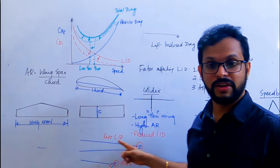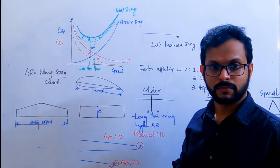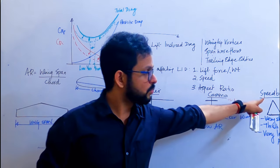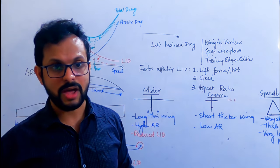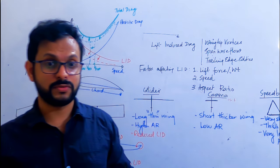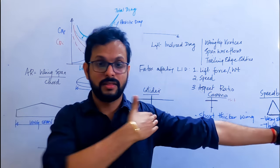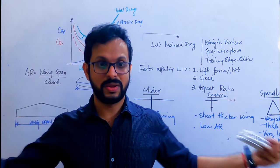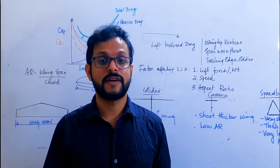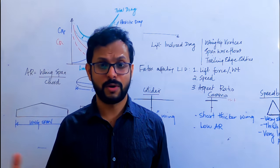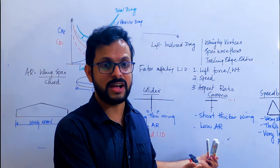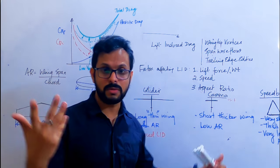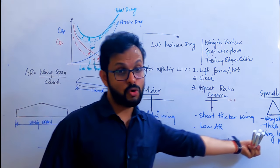Now do you understand why we need to make gliders with a high aspect ratio? It reduces lift-induced drag. But what is the problem with having a high aspect ratio for a speedbird? Structural damage. When you have so much wing exposed to very high speed, the bending moment at the wing root is going to be very high and the wing will break. It is not practically possible to make it structurally sound at that wingspan and that velocity.